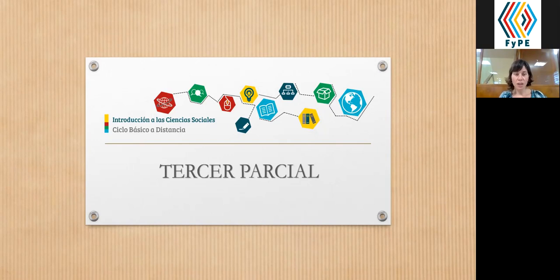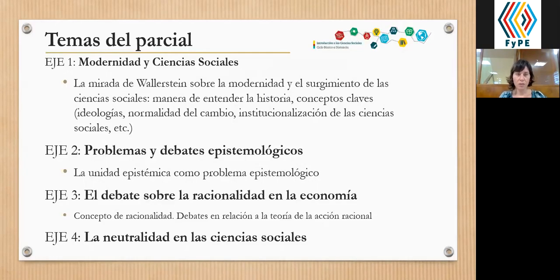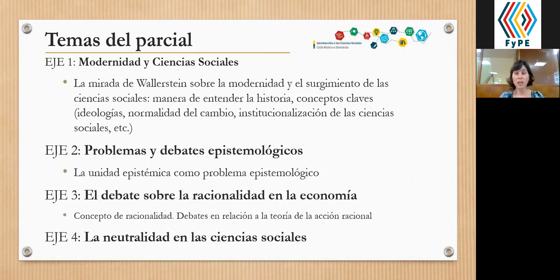¿Cuáles son los temas que entran en el parcial? Esto me parece importante para tener en claro. Como dijimos, lo que va es el eje 4, que es el último tema que nos quedaba para terminar de ver los contenidos de la materia, que es sobre la neutralidad en las ciencias sociales. Repasamos así punto por punto lo que entra en el parcial.